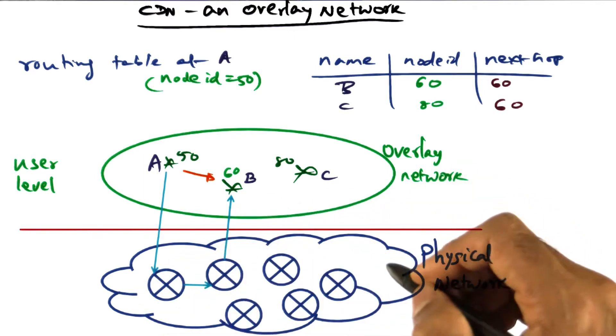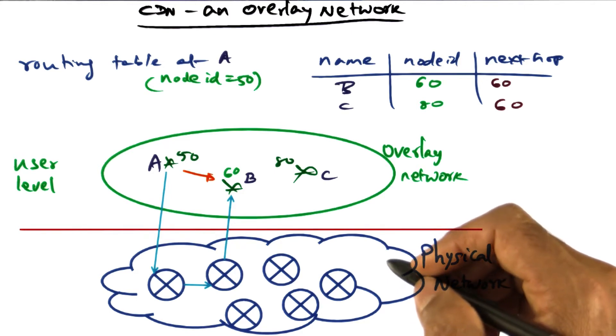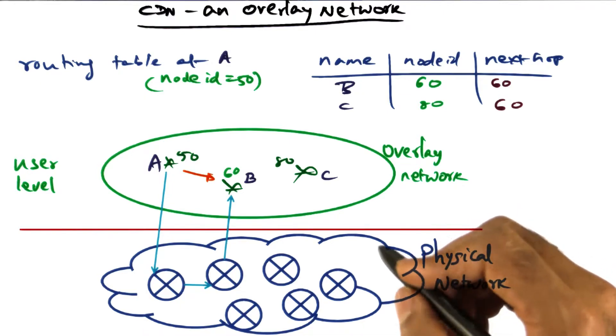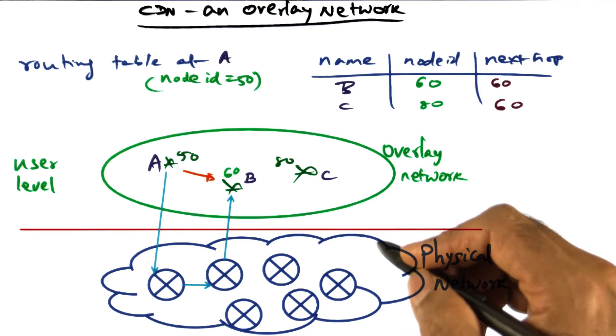As you know, the physical infrastructure of the internet works with IP addresses. But what you have is 80—it's not an IP address. And the operating system only understands IP addresses to route packets on the internet from source to destination.